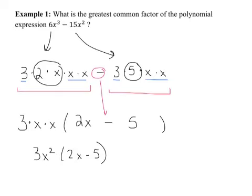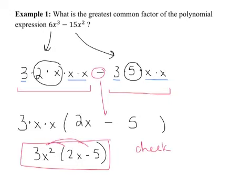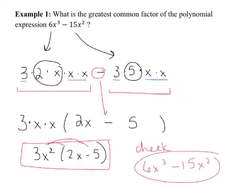We can check that this is correct by distributing. When we distribute, we get 3x² times 2x, which is 6x³, and then 3x² times negative 5, which is negative 15x². So we do get back to what we had in the beginning when we check.